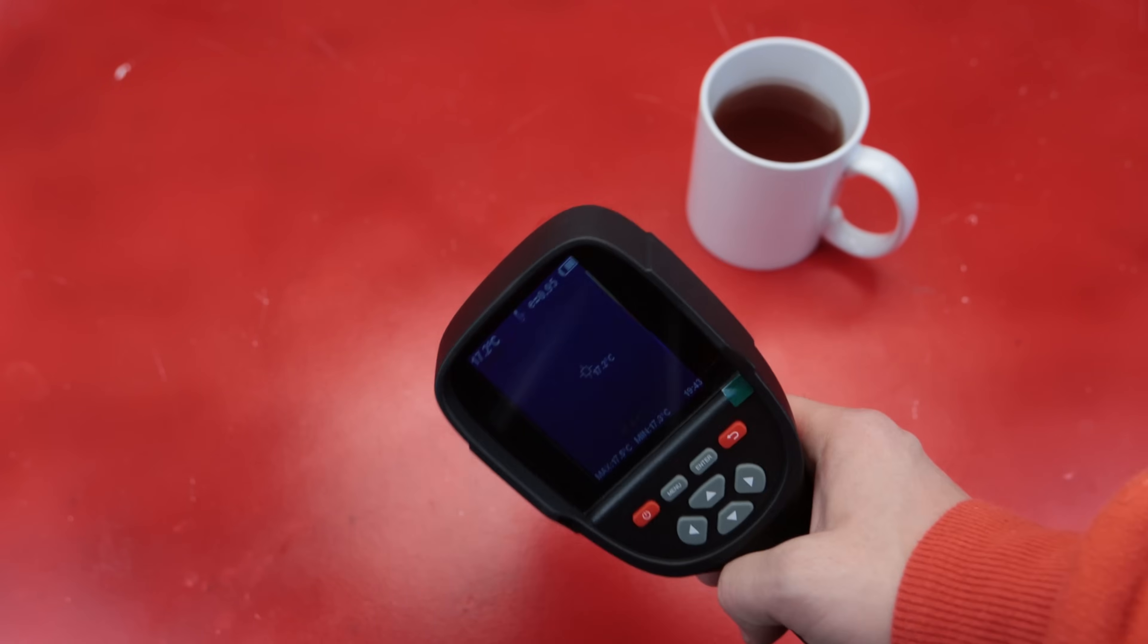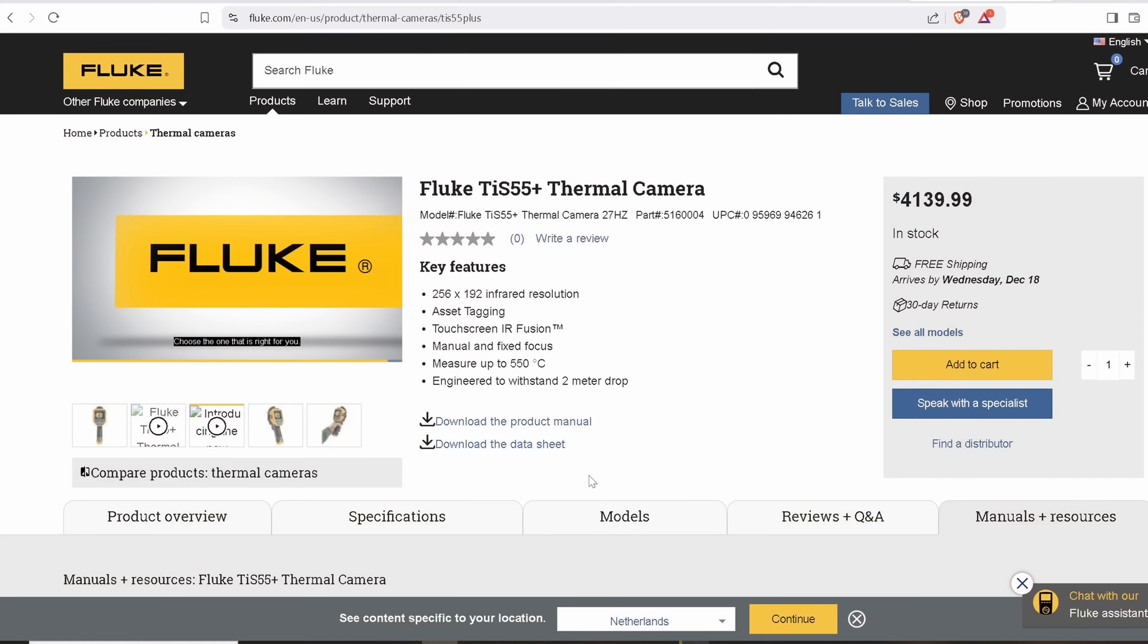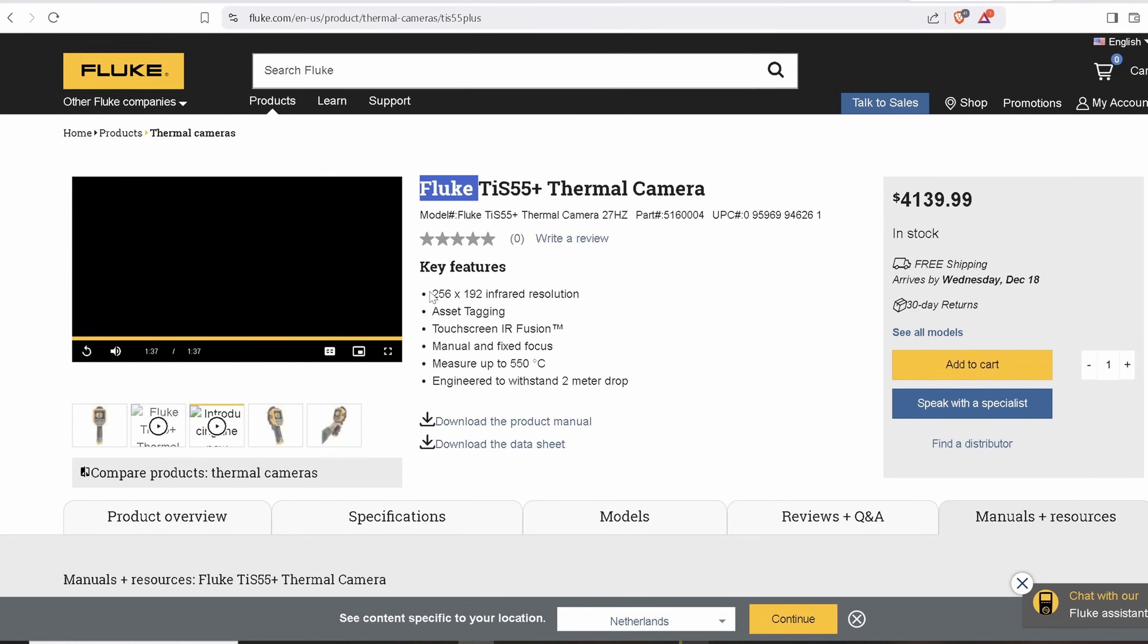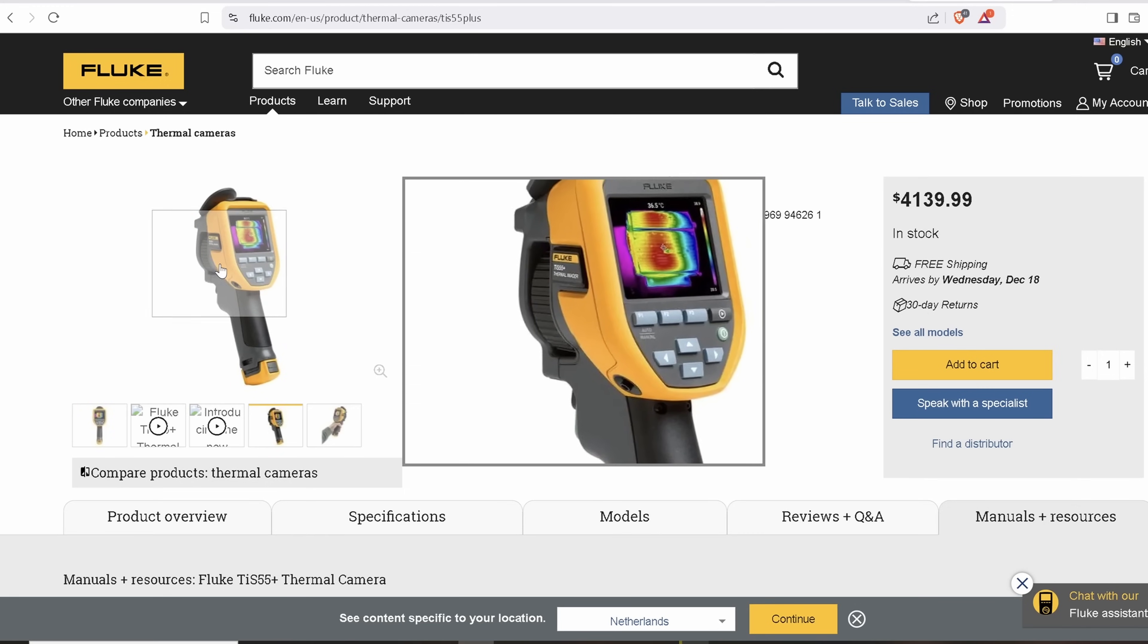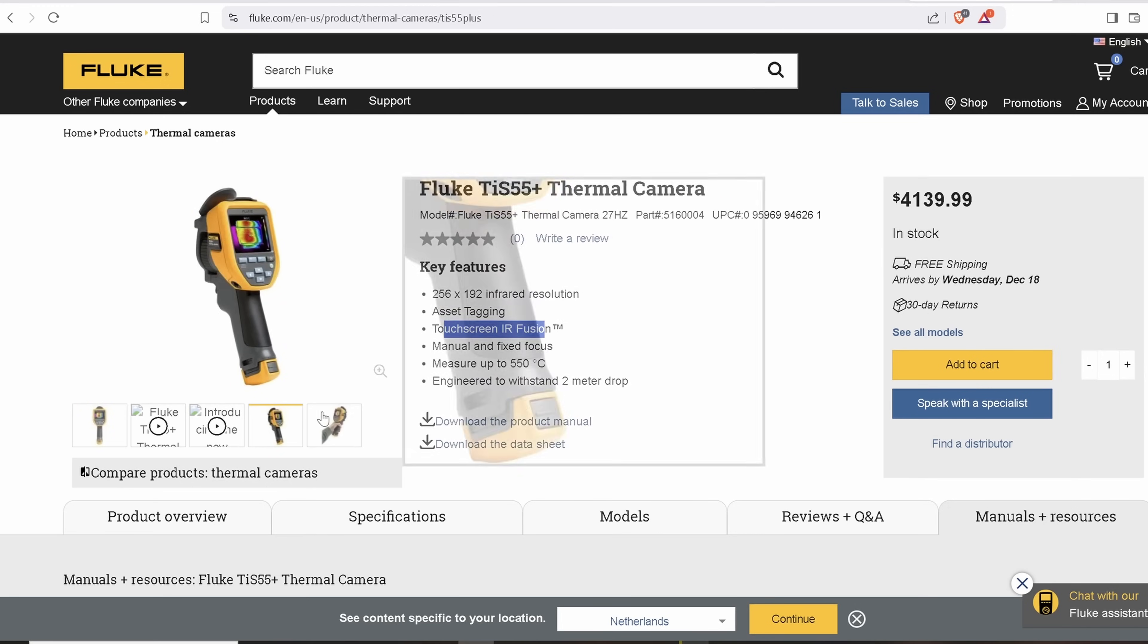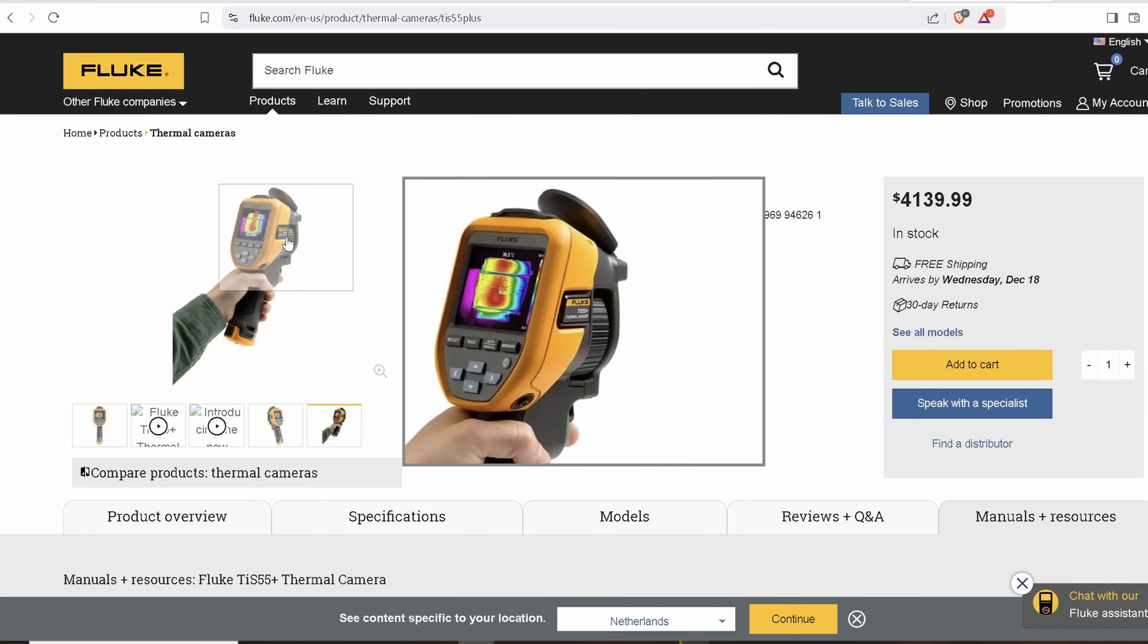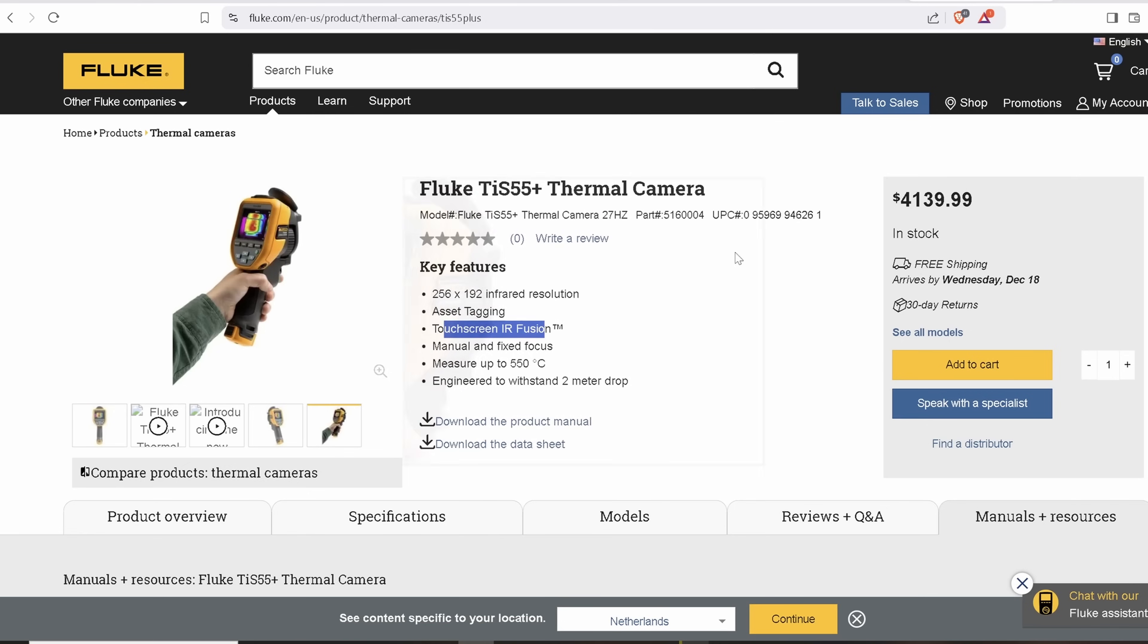While it's booting up I should mention that thermal cameras are usually tools that people are a bit intimidated to use. For example, this thermal camera from Fluke, which is actually one of their lowest end models, has the same infrared resolution. It does have some extra features like touch screen and manual focus instead of fixed, but aside from that it's basically the same. As you can see, its price is about a month's salary for me.